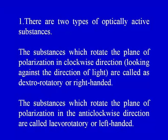Some observed facts about optical rotation: Number one, there are two types of optically active substances. The substances which rotate the plane of polarization in the clockwise direction, looking against the direction of light, are called dextrorotatory or right-handed. And then there are substances which rotate the plane of polarization in the anticlockwise direction, and they are called levorotatory or left-handed.